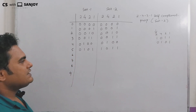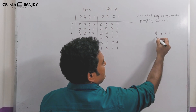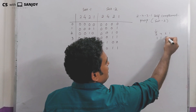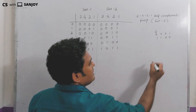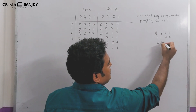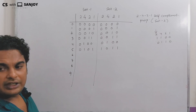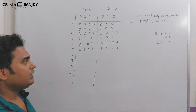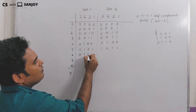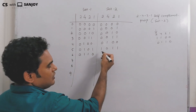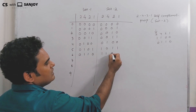Next, for digit 6: one representation is 1100 and another representation is 0110. Set 1 writes 0110 and Set 2 writes 1100.